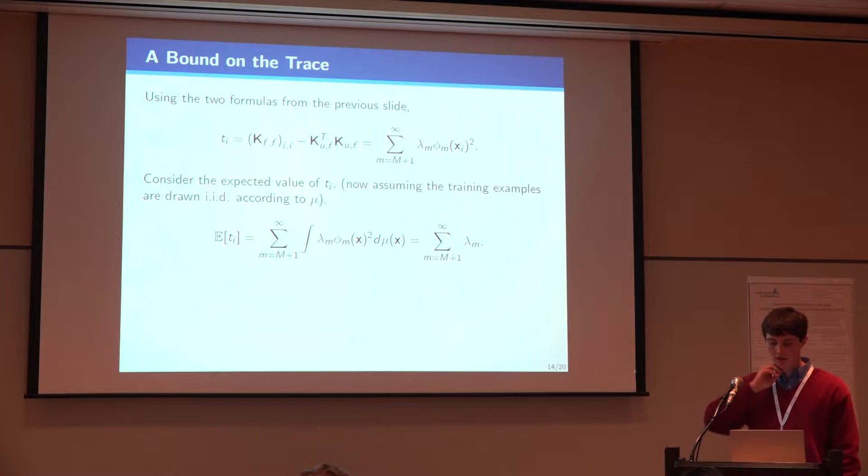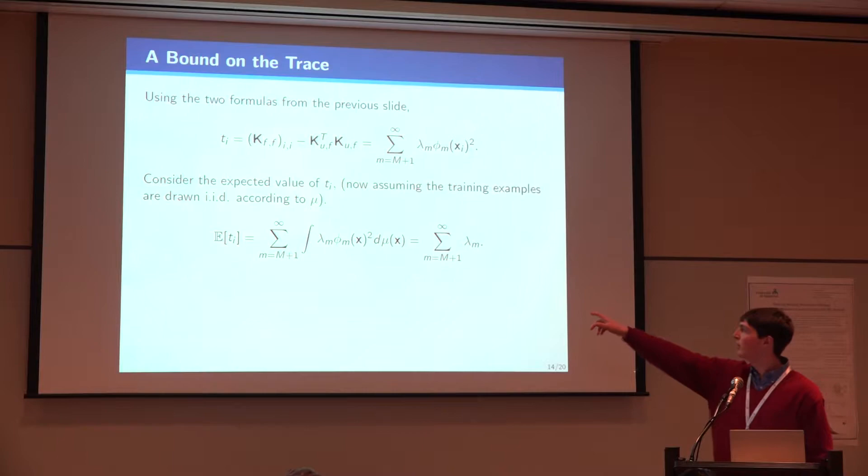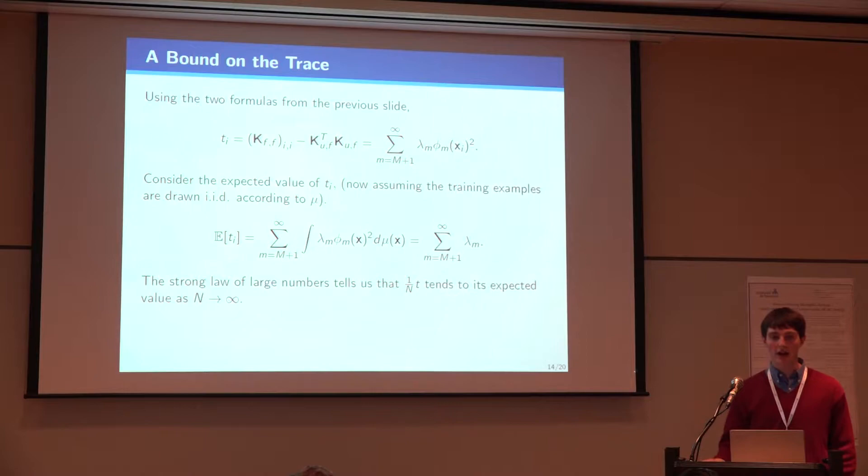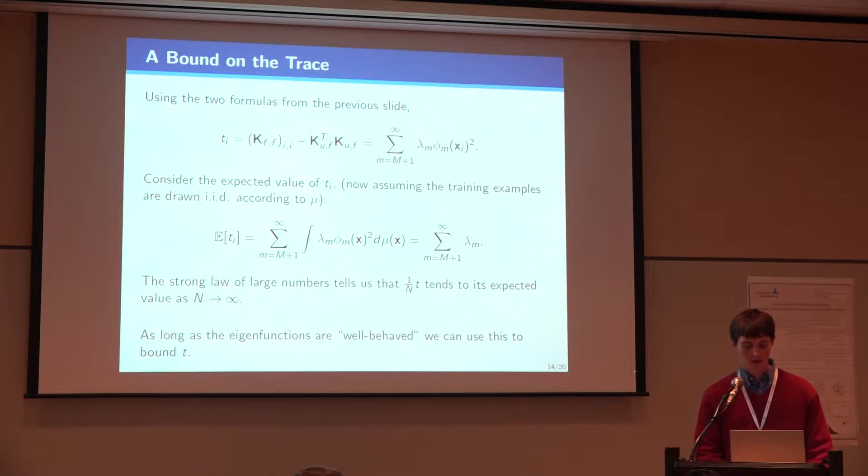So the first thing to do is to look at the expected value of the entries along the trace. And if we assume that the data now comes from the same distribution we used in defining the features, well, then this is just a Monte Carlo estimate. If we were to write out the trace, it would just be a Monte Carlo estimate of its inner integral. So, at least in expectation we get that entries along the trace look like the sum of the tail of the sum of the eigenvalues. So we can say that at least one over n times the trace tends to this. We have to prove then still that the eigenfunctions are well enough behaved so that this estimator actually converges. But we can do that and that's more of a technical detail.